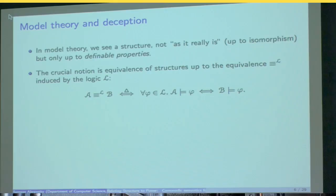So the crucial notion is equivalence of structures up to the equivalence induced by some given logic L. So we say that two structures are equivalent if, for every formula of the language, the logical language, they satisfy exactly the same formulas, they satisfy exactly the same properties. So they're indiscernible by means of that logical language. So this is, and it might be first order logic, for example, or it might be some fragment of first order logic, or some extension with a more powerful language, say with fixed points or something like that. And this is fundamental in model theory.